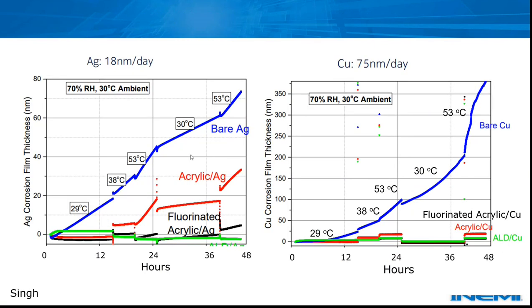Here's a plot from the mixed flowing gas chamber. Again, the acrylic, fluorinated acrylic, and ALD are protecting copper much better than they're protecting silver. If you look on the copper corrosion chart, all colored plots except blue are very close to the axis, whereas on the silver corrosion chart we're getting sizable corrosion rates. So the mixed flowing gas chamber results also show that these coatings protect copper much better than silver.